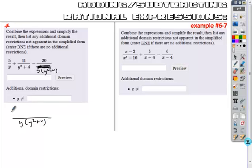If I take my first fraction's numerator 5 times any LCD factors that are missing from its denominator, it's missing the y squared plus 4, plus my next fraction's numerator 11 times any LCD factor missing there. It's missing the y. And then minus 20 times any LCD factors missing here.